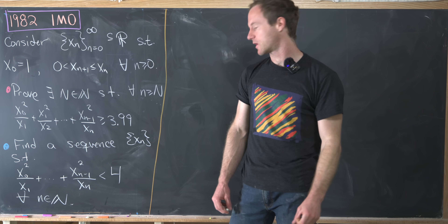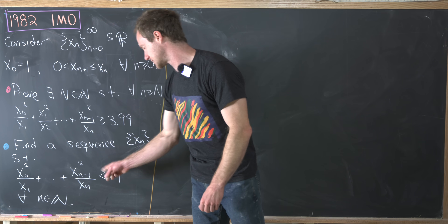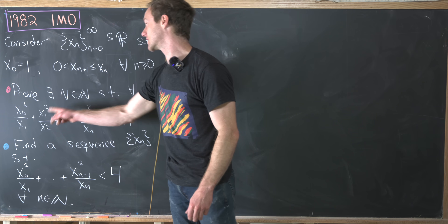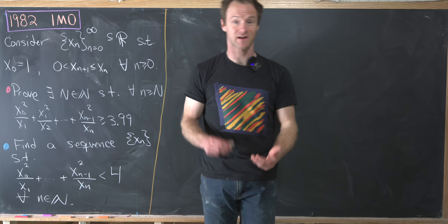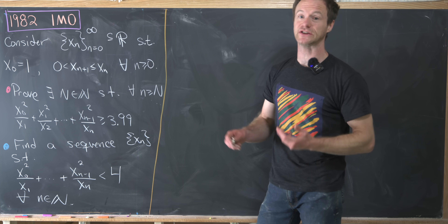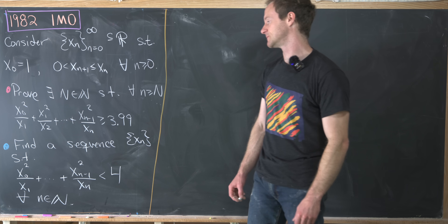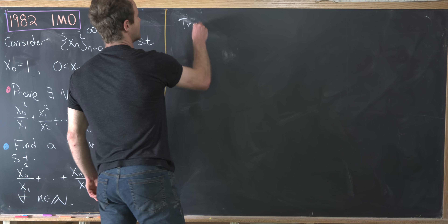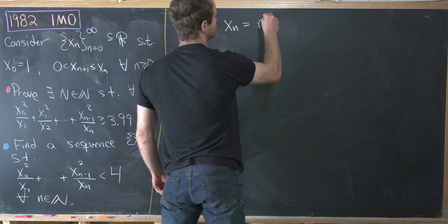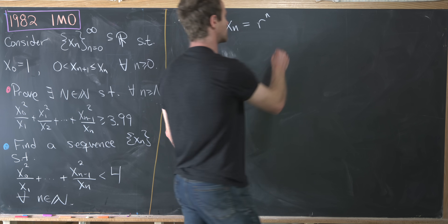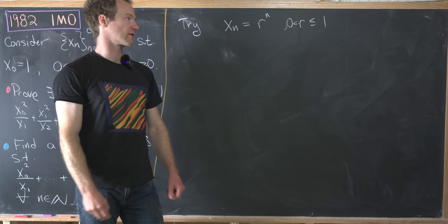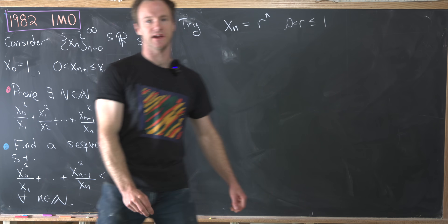For the second part of the problem, we want to find a specific sequence that makes the sum less than 4. The value 4 is playing an important role for this type of object. For math contest problems there's usually a fairly simple answer, so we should try a simple sequence — let's try a geometric sequence, setting xₙ = rⁿ, where 0 < r ≤ 1 so the conditions are satisfied.